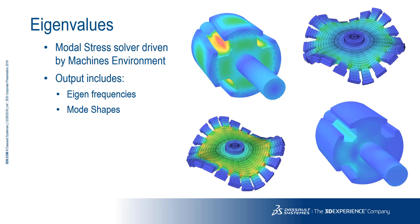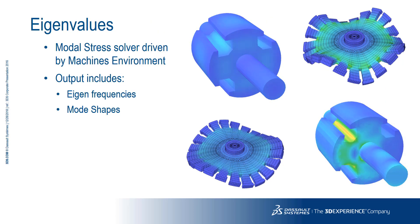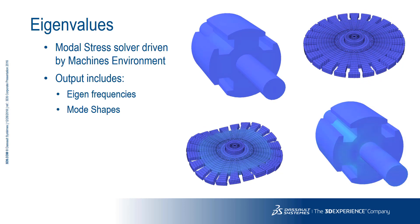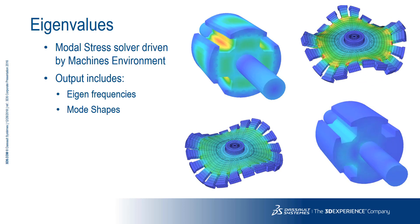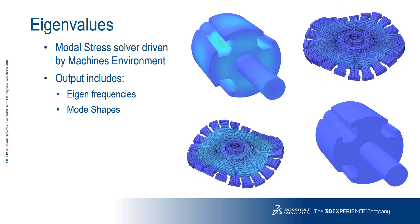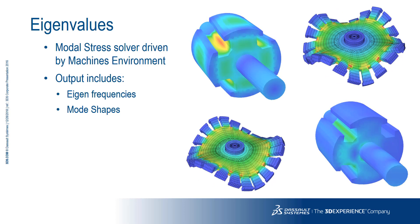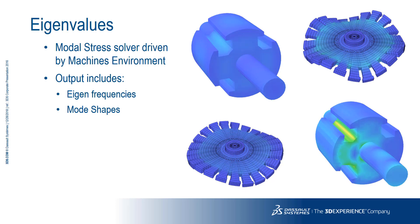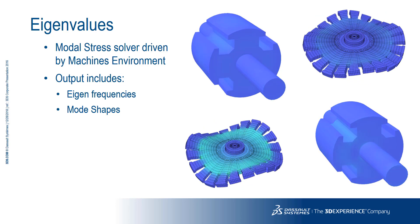Eigenvalue analysis can be applied to all of the machines available in the 3D machines environment. The analysis uses the modal stress solver to calculate the eigenvalues and eigenvectors for the stator and/or rotor. The output from this analysis is a list of eigenfrequencies found in the intervals specified by the user, along with images showing the displacements for each of the modes.